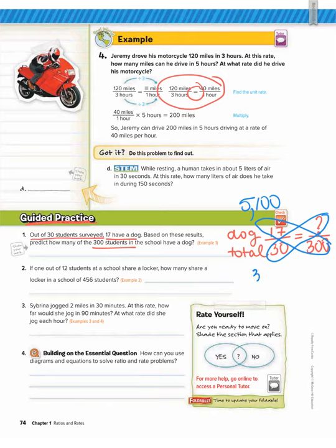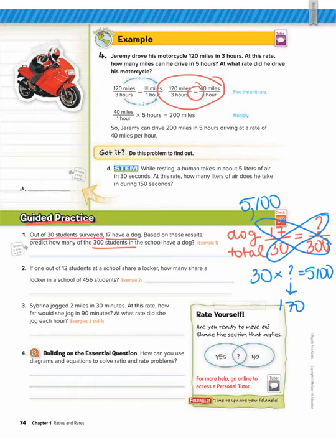We want to know: 30 times what is going to give us that same number? To find that out, take the answer we just got and divide it by 30. 5,100 divided by 30 gives us 170. So 30 times 170 gives us 5,100 — the same cross product. That means the answer is 170 students. We could predict 170 students to have a dog if we surveyed 300 students.